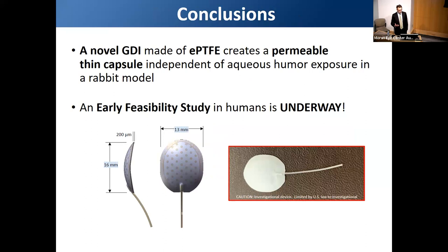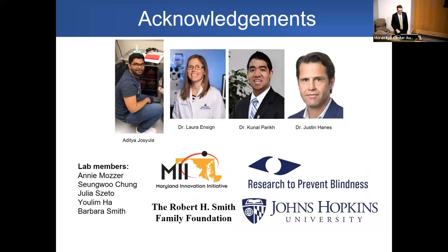In conclusion from this part of the study: this is a novel GDI made of a special dual-layered ePTFE that creates a permeable thin capsule. It decouples aqueous humor exposure and plate radius from capsular thickness in our rabbit model, which is prone to scarring. Early feasibility studies in humans are underway, with the implant redesigned for human use, and enrollment of the first patient is forthcoming.